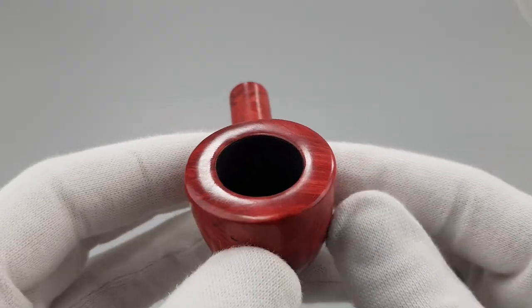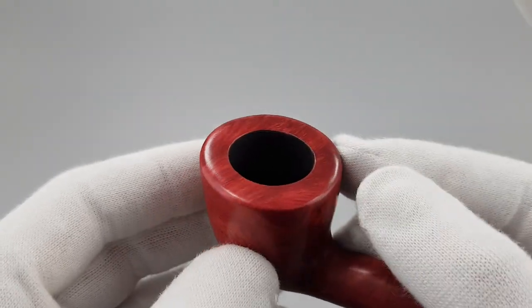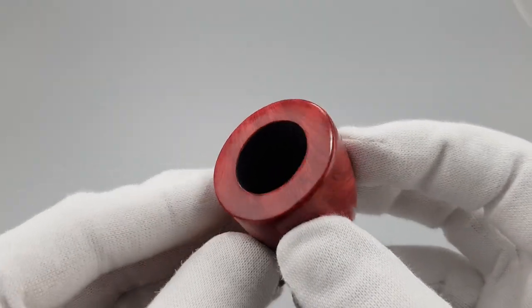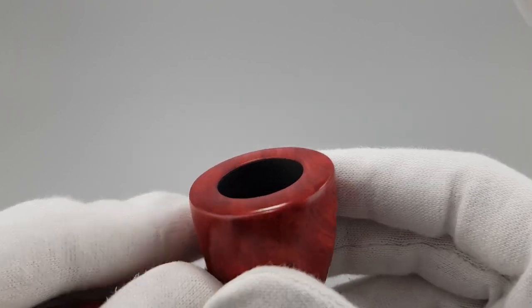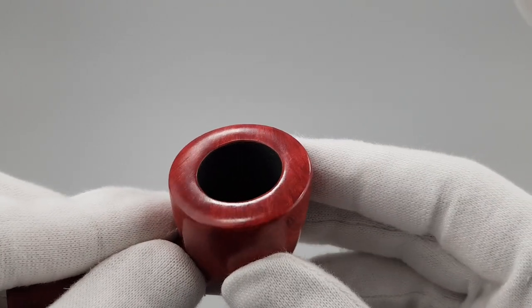Let's start with the rim. Nice and clean edge without burns or darkening. Slightly oval. Maybe it's actually not, but it looks a bit oval when you look at the edge, inner edge.